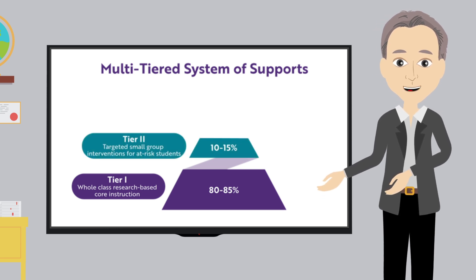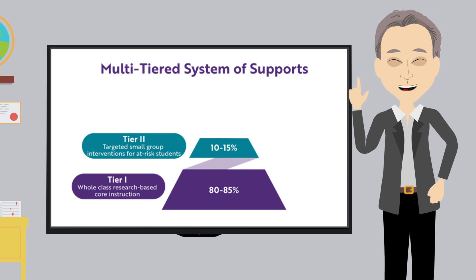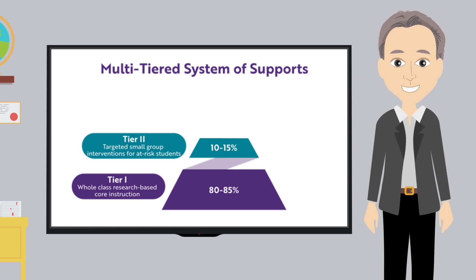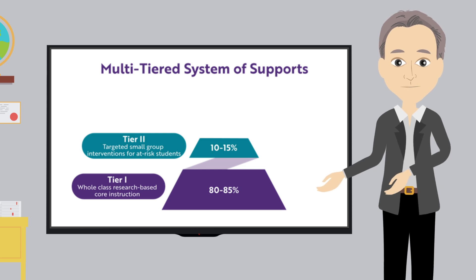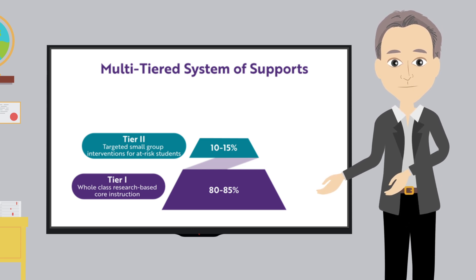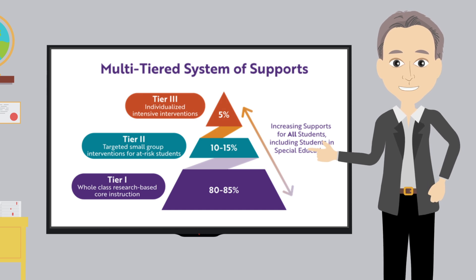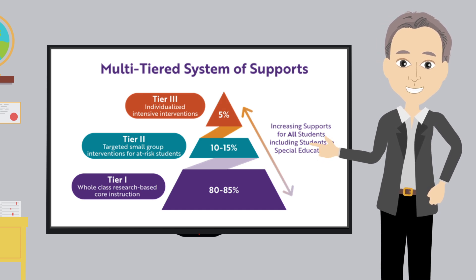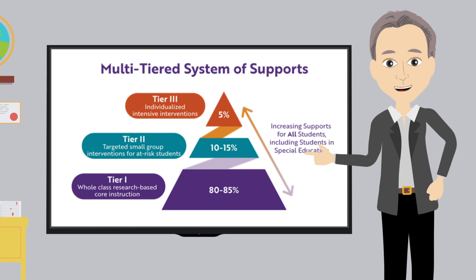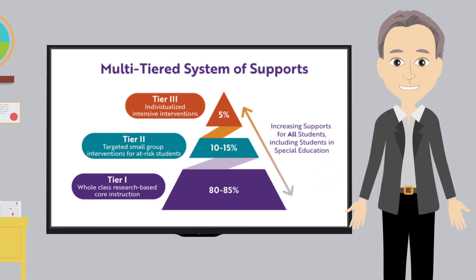Tier 2 represents the population who have been identified as performing slightly below grade level expectations and, therefore, need a bit more targeted support in addition to their regular Tier 1 instruction. Tier 3 is the top of the pyramid and represents the student population considered to be at high risk of experiencing literacy difficulties and requires more intense targeted support than Tier 2.